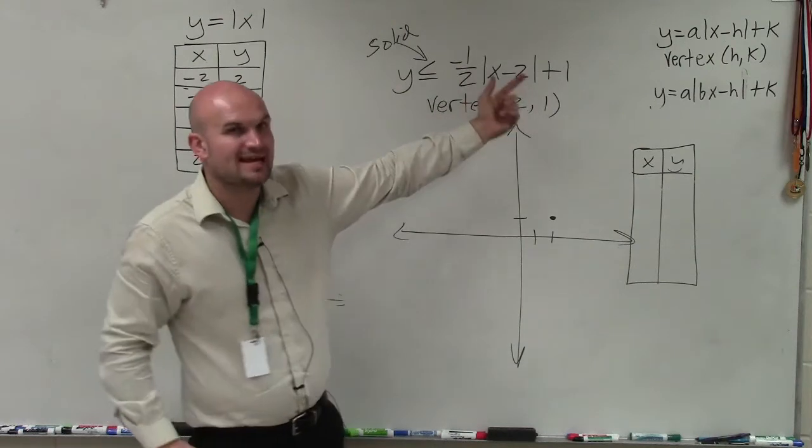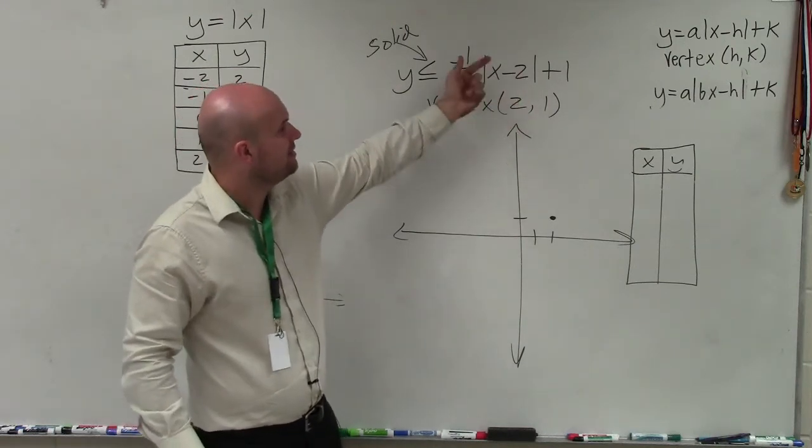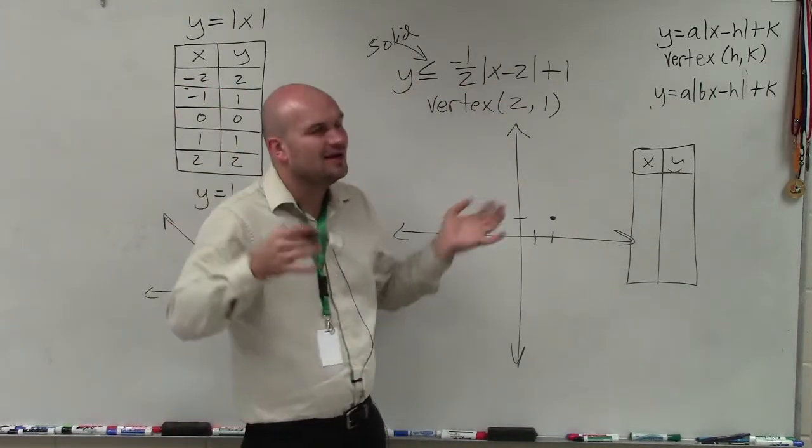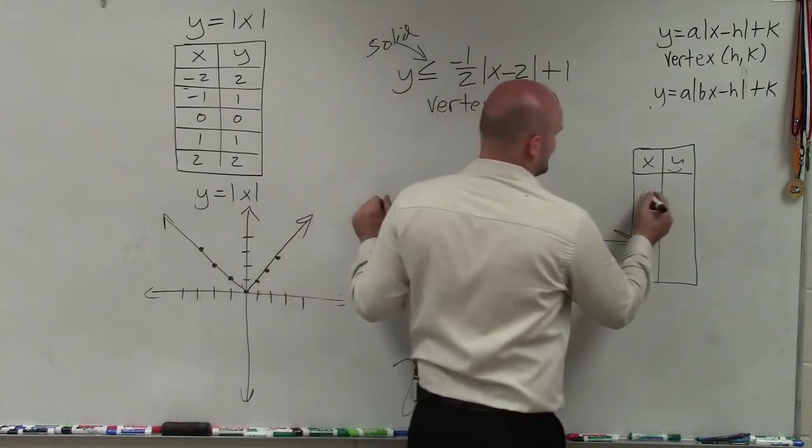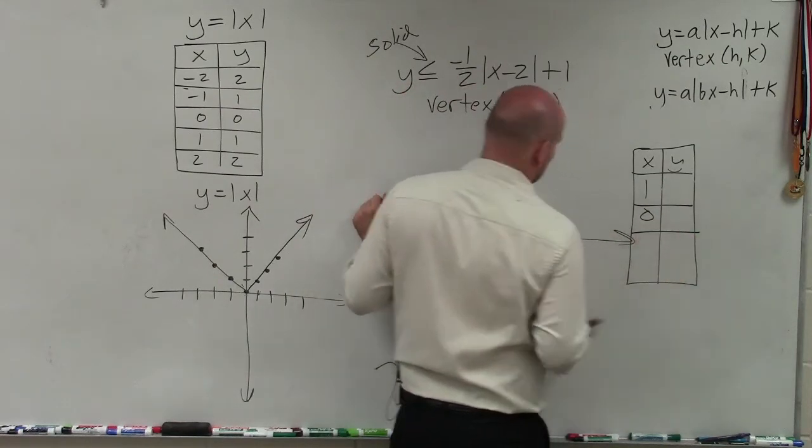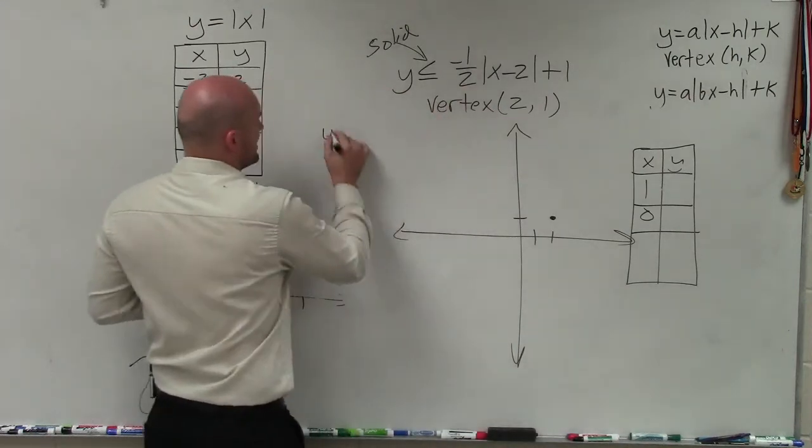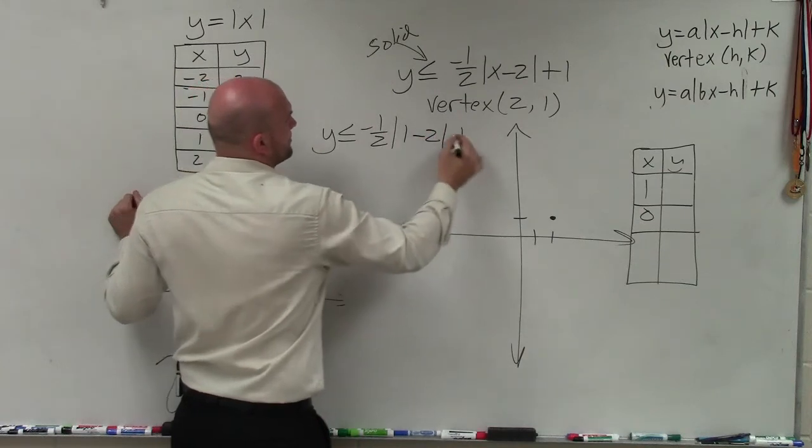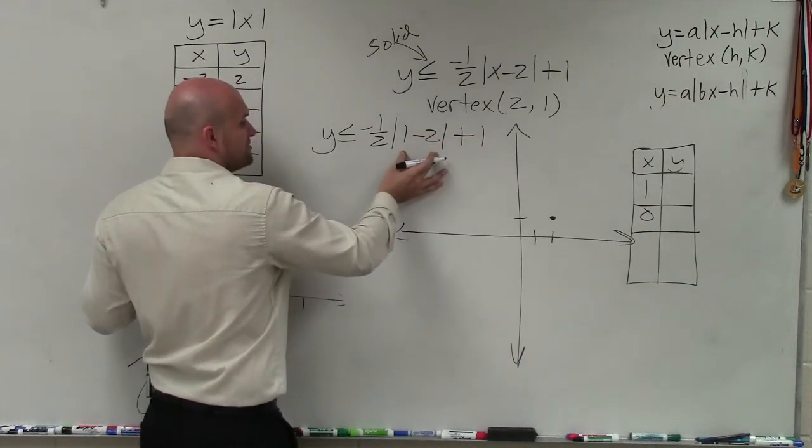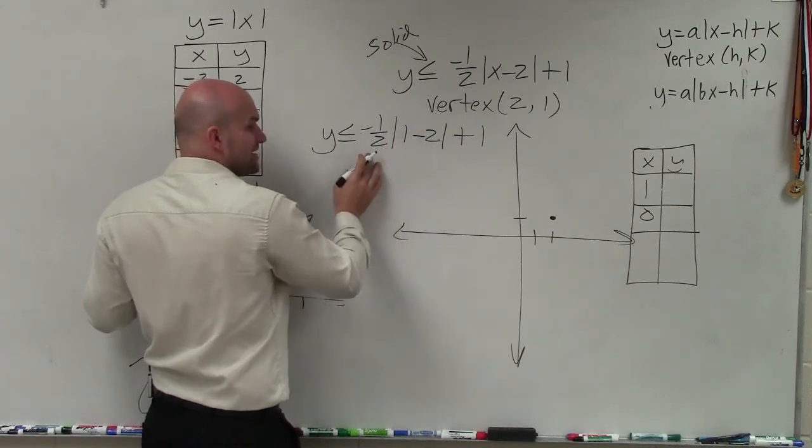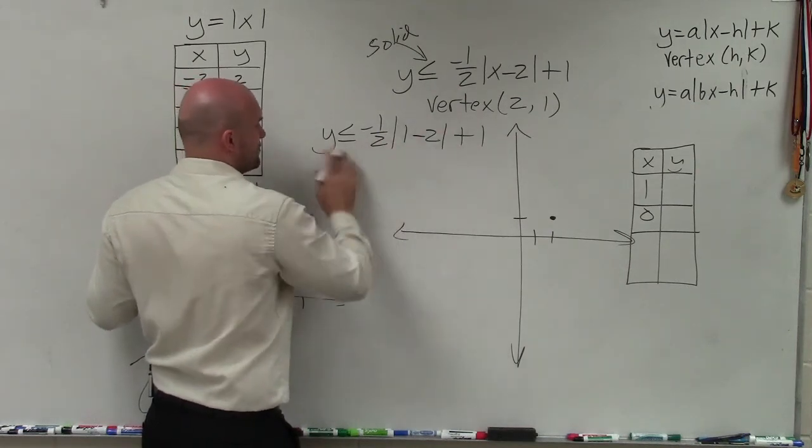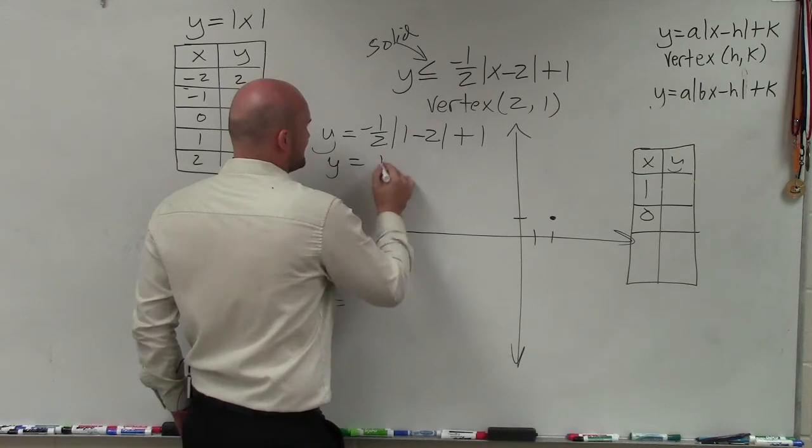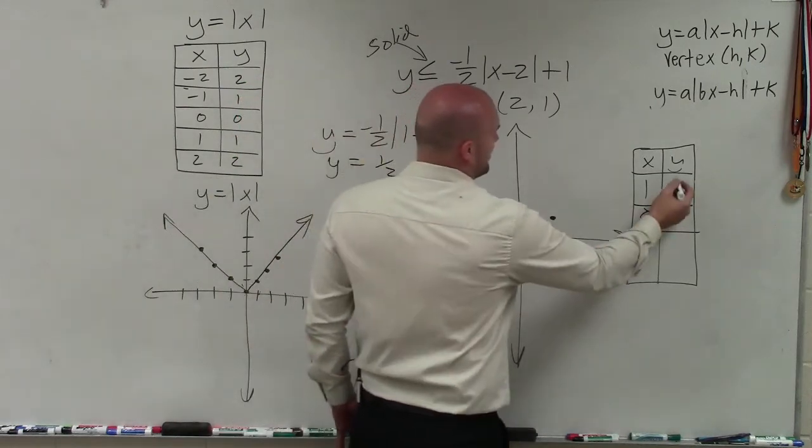Let's do 1 and 0, because I think those would be the obvious ones students would use. So let's plug in 1. 1 minus 2 is negative 1. Absolute value of negative 1 is positive 1. Positive 1 times negative 1/2 is negative 1/2. Negative 1/2 plus 1 is equal to 1/2. So therefore, at 1, I have 1/2.